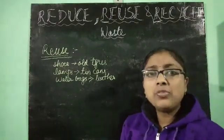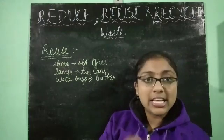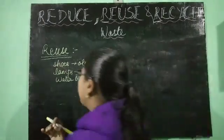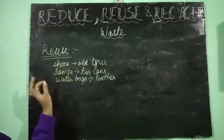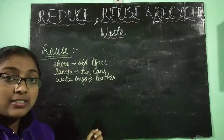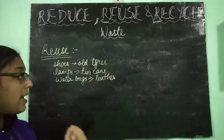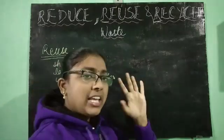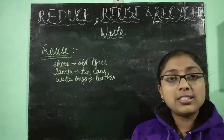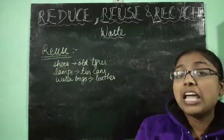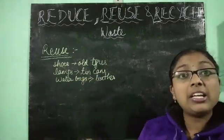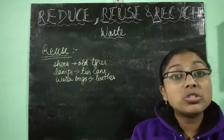The second R stands for reuse, which means the things that we consider as waste can be reused as useful things. For example, some shoes that we wear are made from old tires. Lamps are made from tin cans that are considered useless. Water bags are made from leather. There are many such examples that tell us that things we consider as waste can be put back into use.